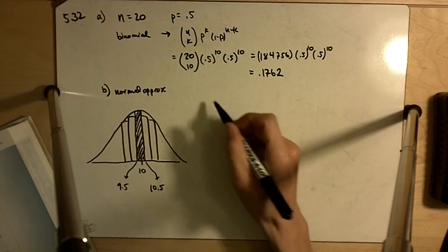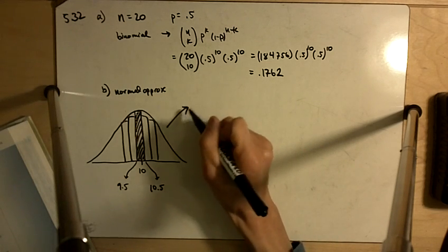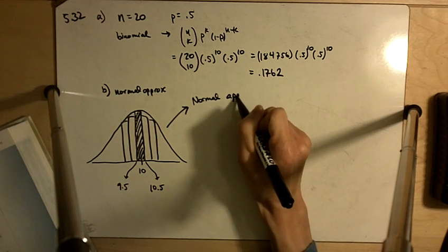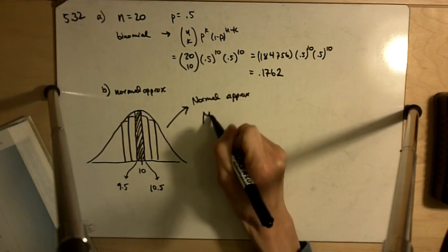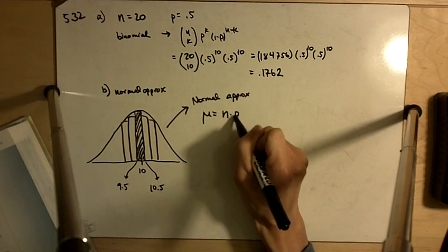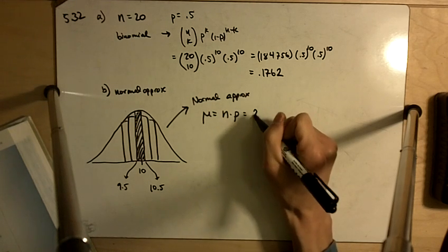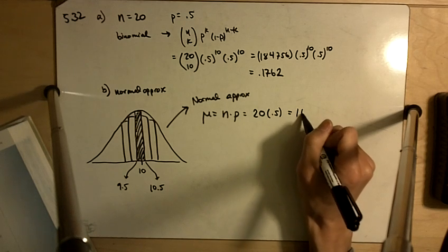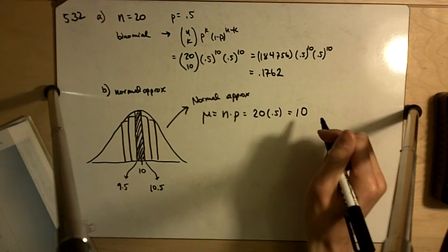For the normal approximation, the mean mu is equal to n times p, so that's going to be 20 times 0.5, so n is equal to 10.